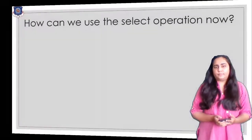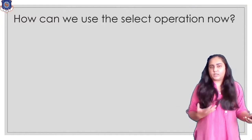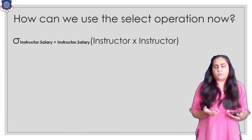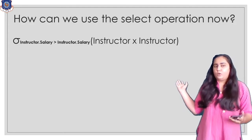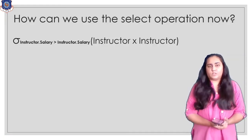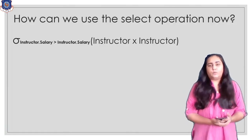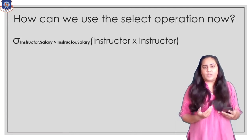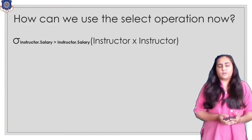Now suppose I want to apply a select operation on this Cartesian product table. If I want to compare the salary from one copy of the table with the salary from the other copy, how would I write that condition? I previously mentioned that you should write instructor dot i_id and teachers dot i_id, attaching the table name to the column in the sigma condition to avoid ambiguity. But now, even attaching the table name does not remove the ambiguity, because both tables have the same name.